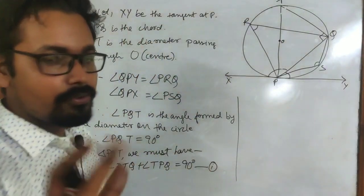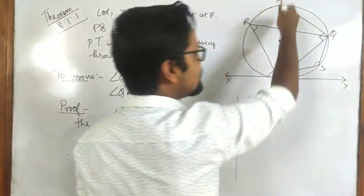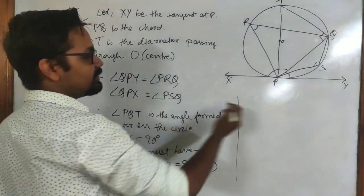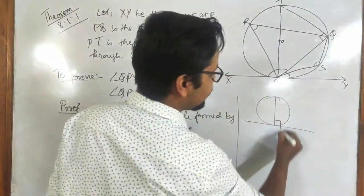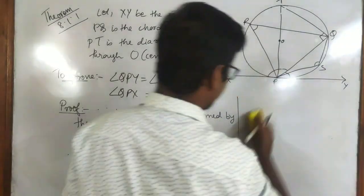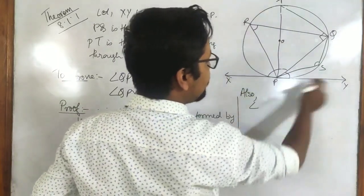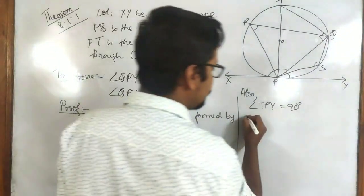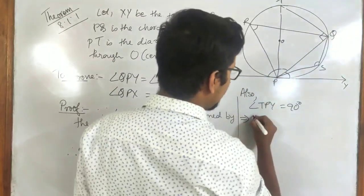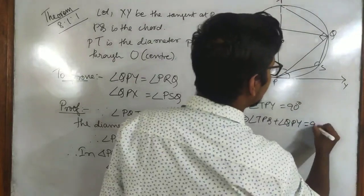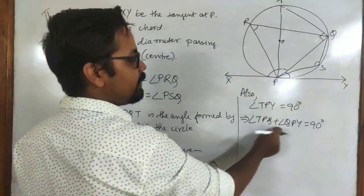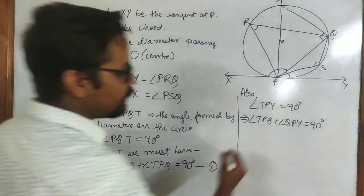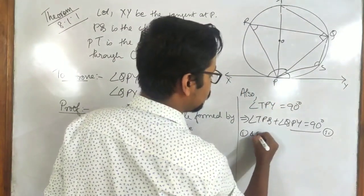The angle formed by the tangent with the diameter is always 90°. So angle TPY = 90°. Splitting angle TPY into two parts: angle TPQ + angle QPY = 90°. Let this be equation (2). We have split TPY into TPQ and QPY.